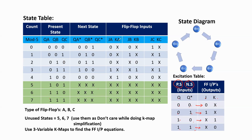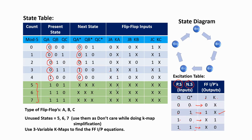Now we should fill the values for JA and KA. JA and KA are determined based on QA and QA* values. For count 0: QA=0, QA*=0, so JA=0, KA=don't care. For count 1: QA=0, QA*=0, so JA=0, KA=don't care. For count 2: QA=0, QA*=0, so JA=0, KA=don't care. For count 3: QA=0, QA*=1, so JA=1, KA=don't care. For count 4: QA=1, QA*=0, so JA=don't care, KA=1. For the remaining unused states, all values are don't cares.